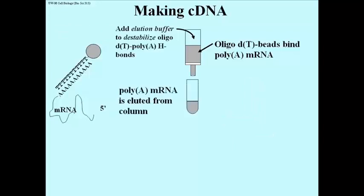After throwing away the stuff you don't want, you add a special buffer, destabilizing the H-bonds between the Ts and the As, and off comes the polyadenylated mRNA. We say it's eluted from the column. And so now we have poly-A mRNA in this test tube below the column.